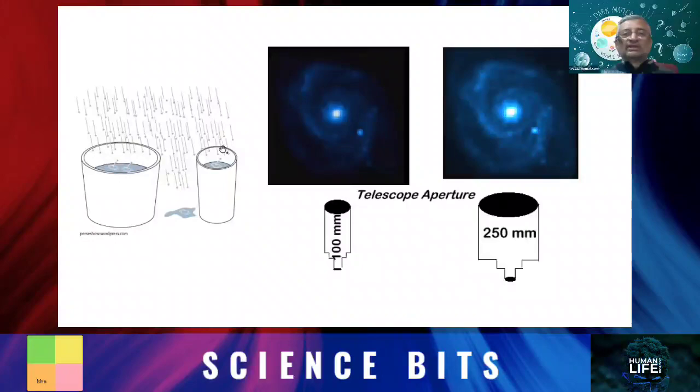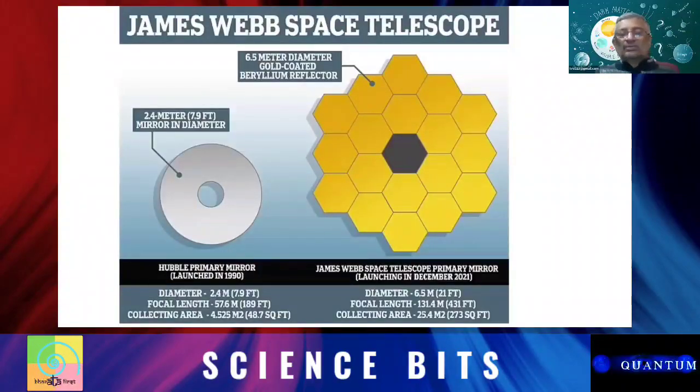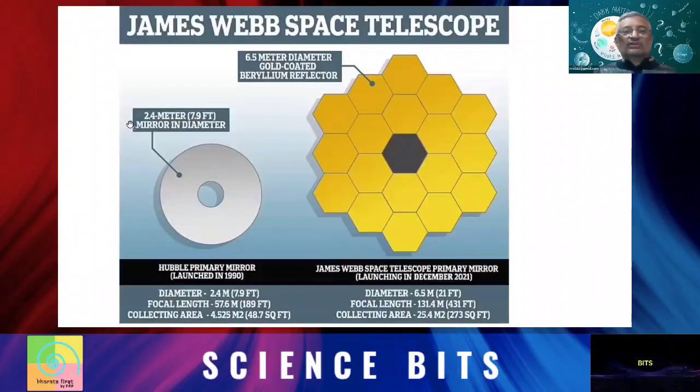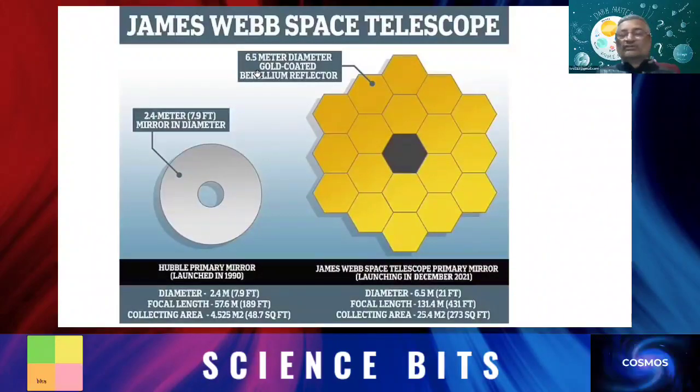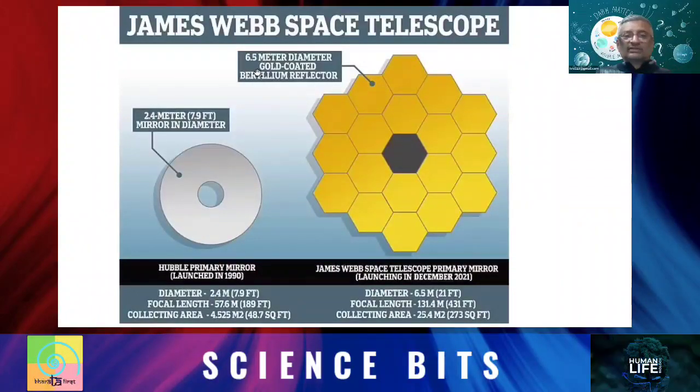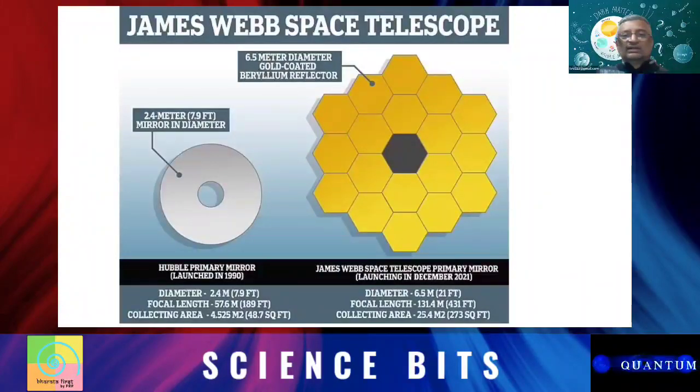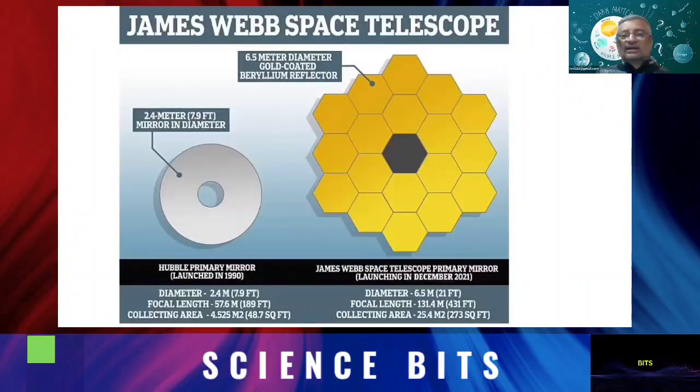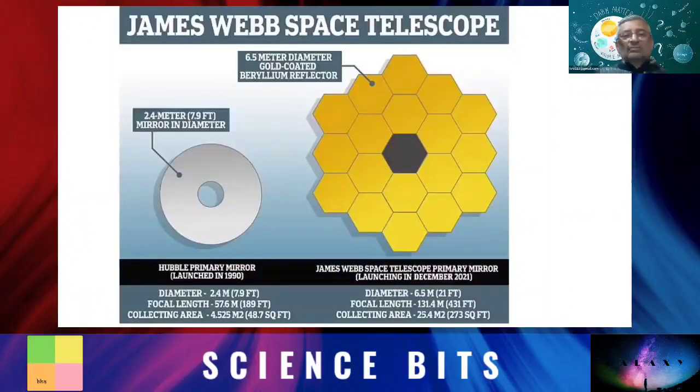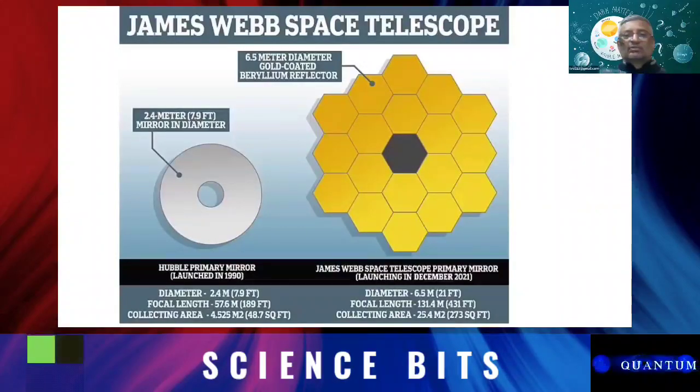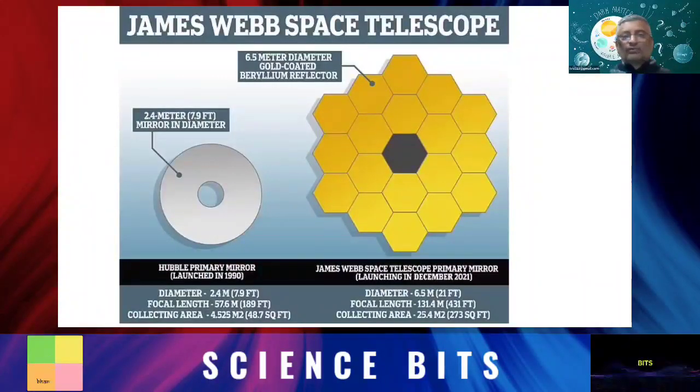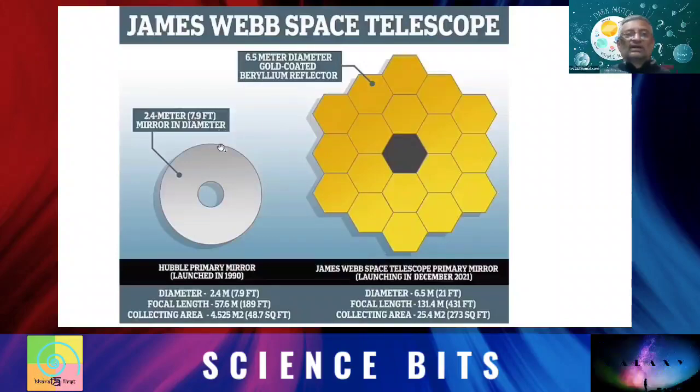So this one is a big telescope compared to Hubble. Hubble, for example, was 2.4 meters, whereas this is going to be 6.5 meters. Which means that it has a collecting area much larger. Hubble has a collecting area of roughly about 4.5 square meters, whereas it has something like about 25.4 square meters.